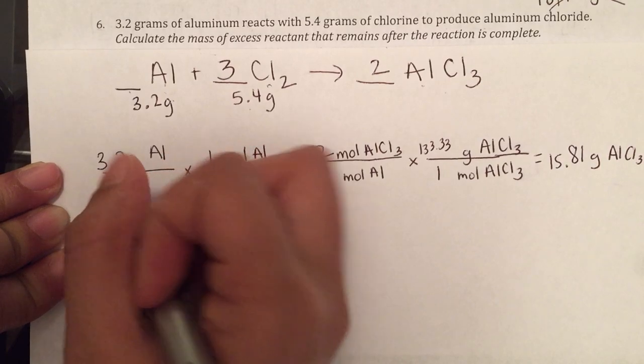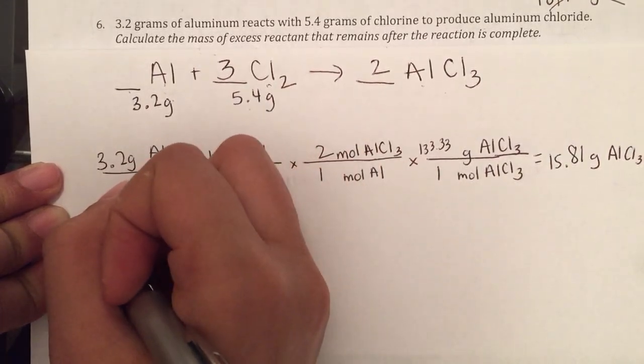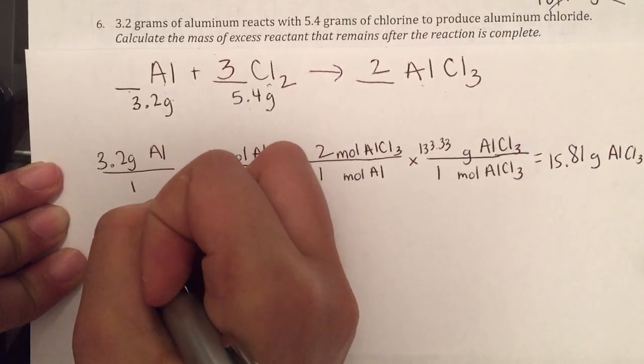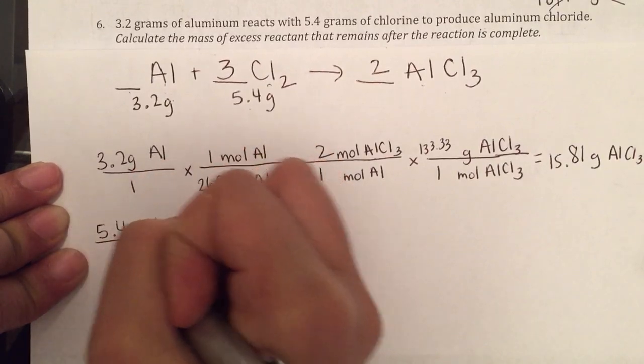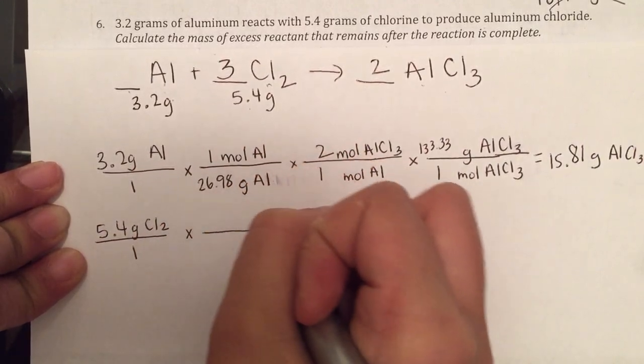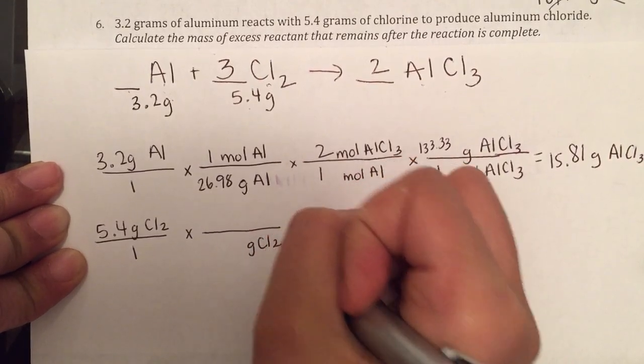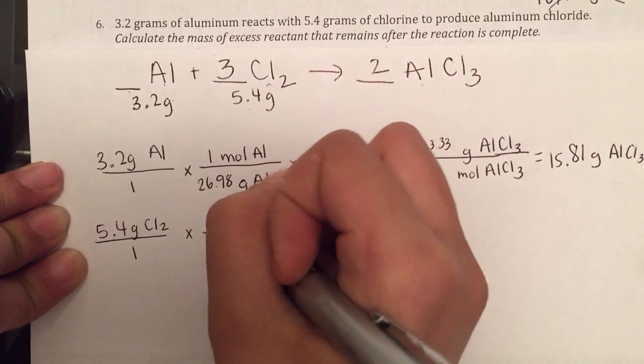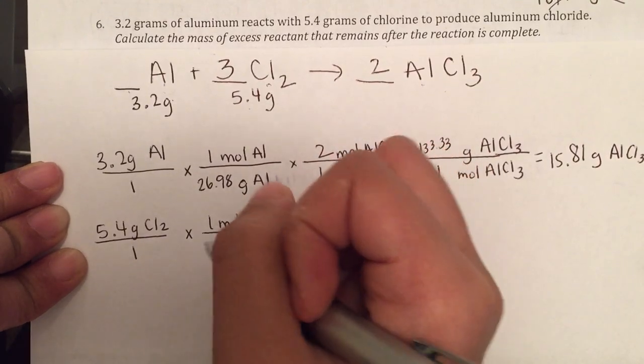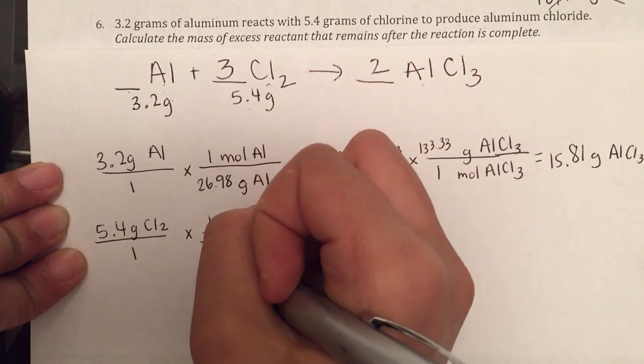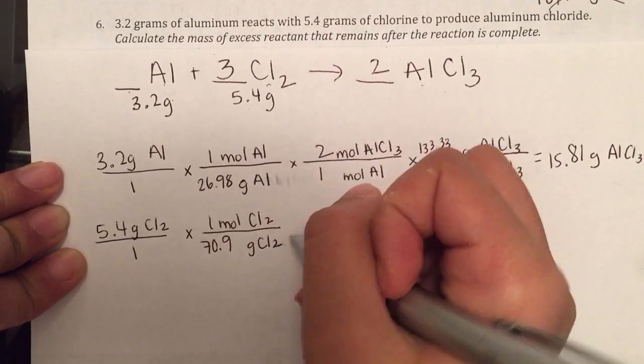I'm going to go to my other reactant, 5.4 grams of chlorine, over 1. So I'm looking at grams of chlorine to 1 mole of chlorine. And notice the 2 is here, so you need to make sure that you're writing the mass of 2 chlorines.